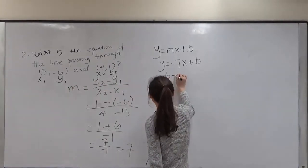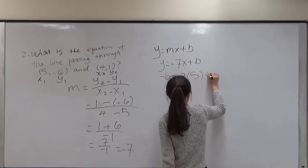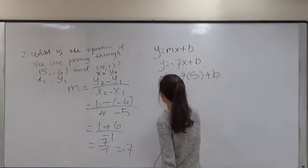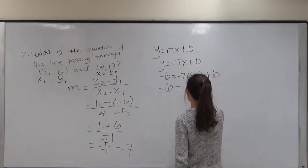Negative 6 equals negative 7 times positive 5 plus b. Negative 6 equals negative 7 times 5, that's negative 35 plus b.